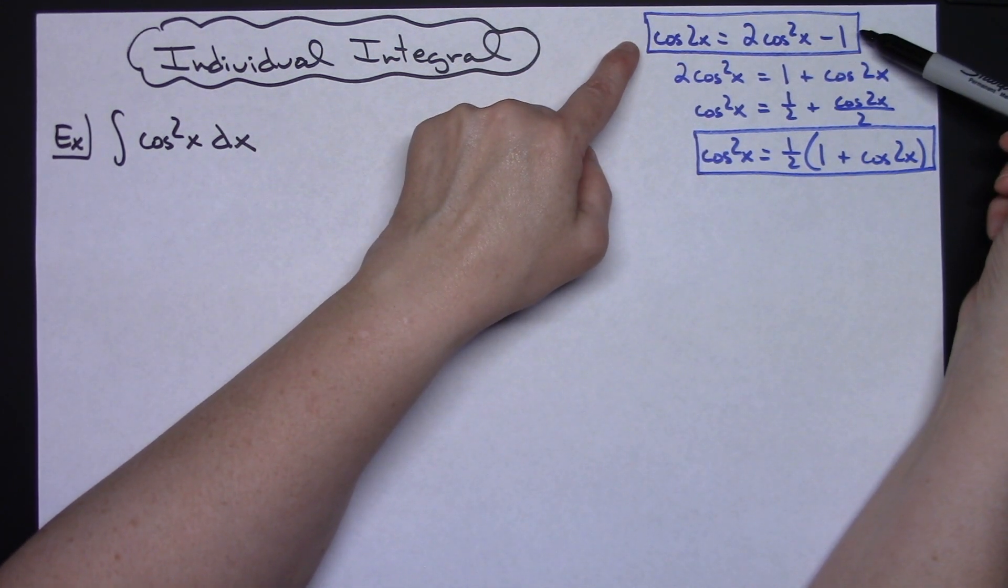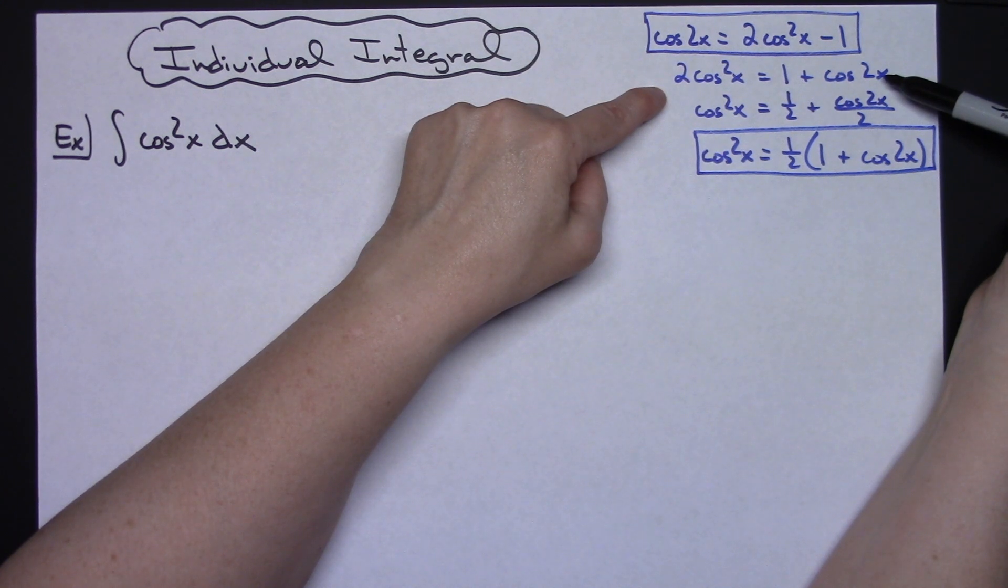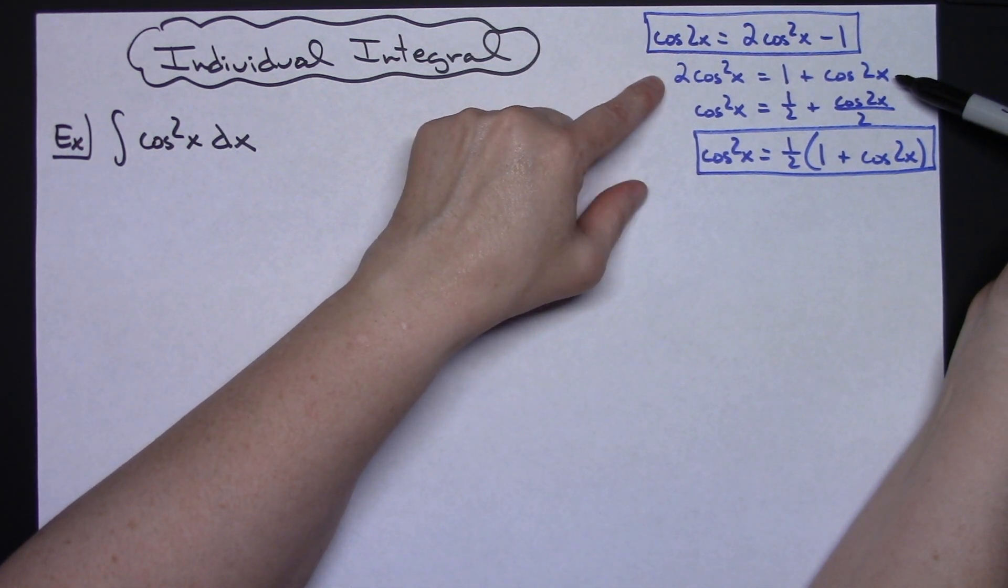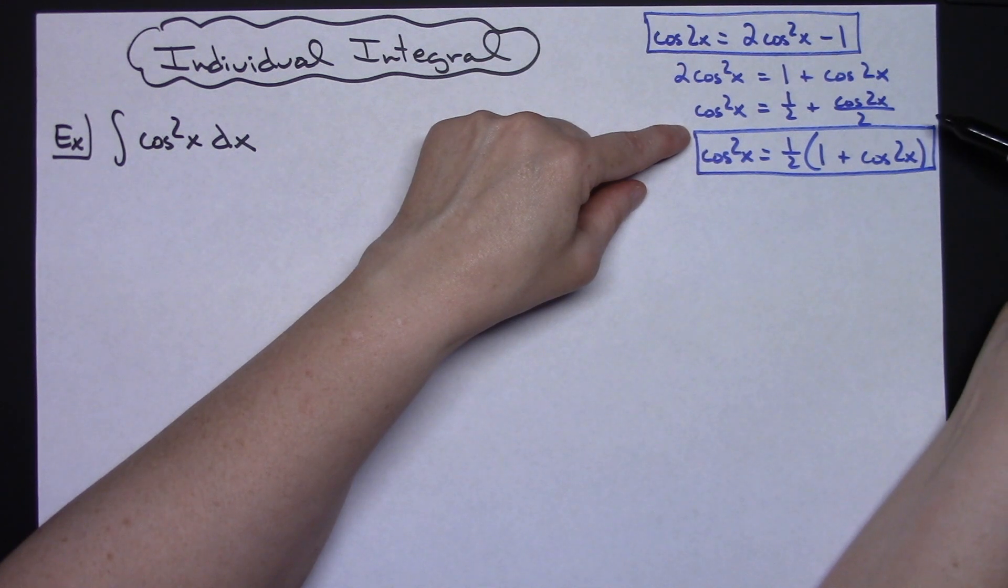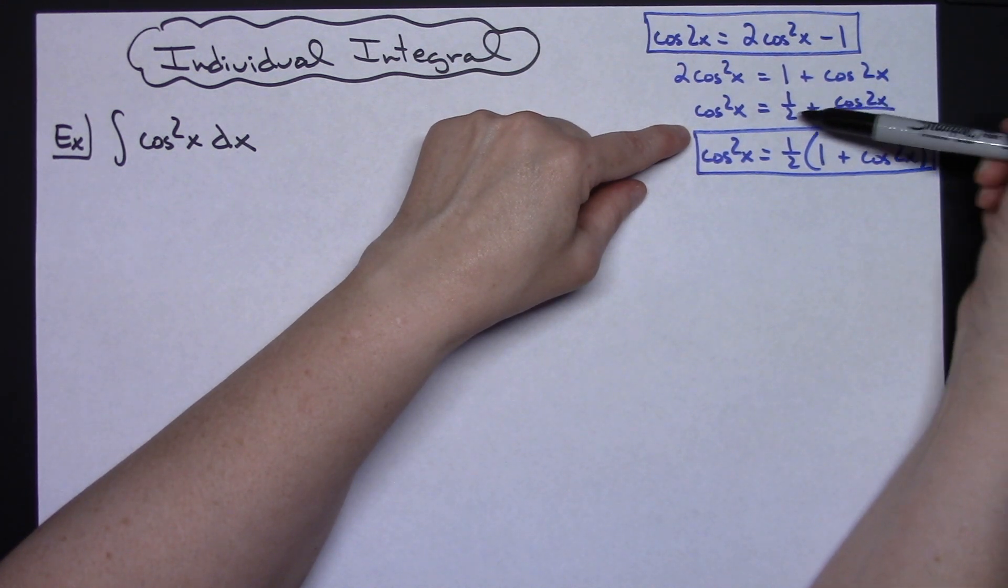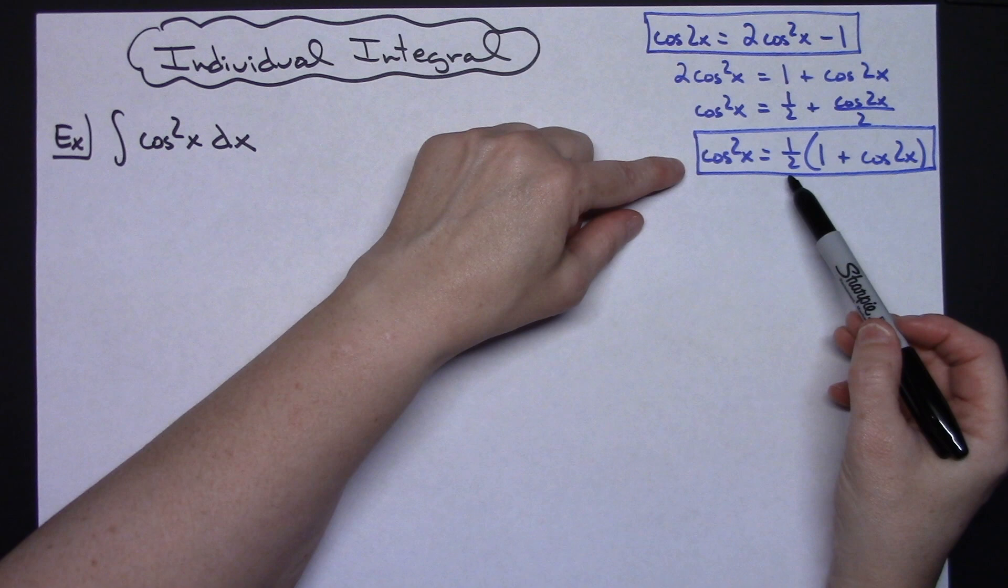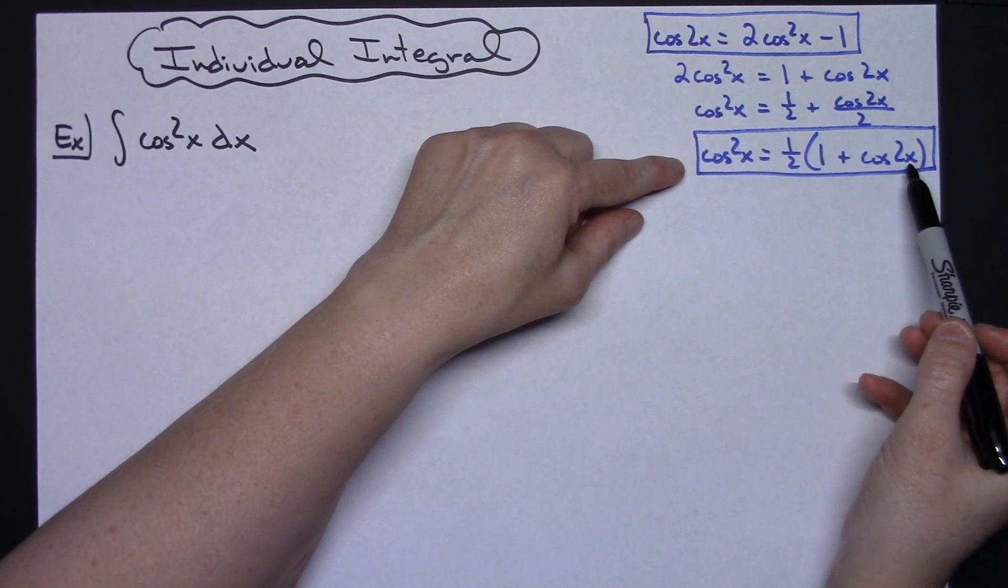Taking this and rearranging the equation, I then have 2 cosine squared x equals 1 plus cosine 2x. I can divide the 2 off on both sides, and then I've got 1 half plus cosine 2x over 2. If I factor out a 1 half there, I'm going to get 1 half times the quantity 1 plus cosine 2x.